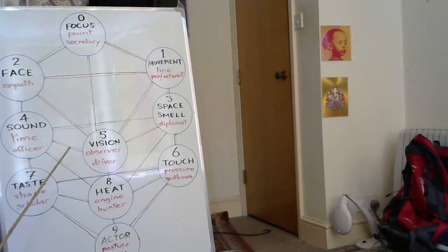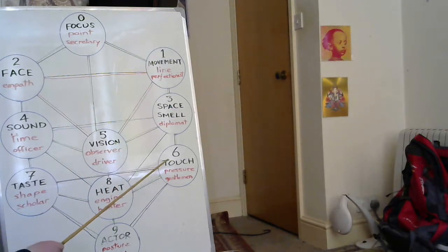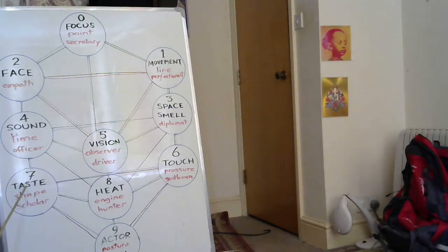So then we come on to the pressure triangle, which is the touch, the shape, the pressure and then the calisthenic sense, the orientation, the posture. This is the pressure triangle.